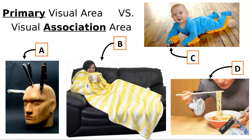Now let's do a fun activity. One of the things you're studying is the difference between a primary sensory area and a sensory association area. I did a web search for real inventions you could actually buy, and I'd like us to look at these inventions and figure out what they are and what we might use them for.